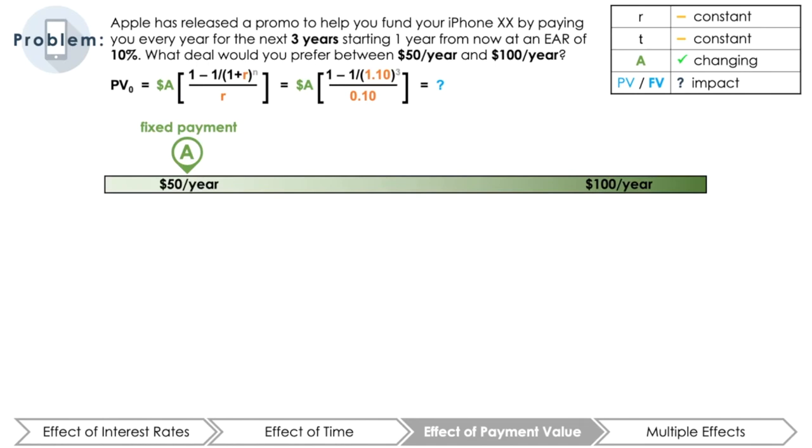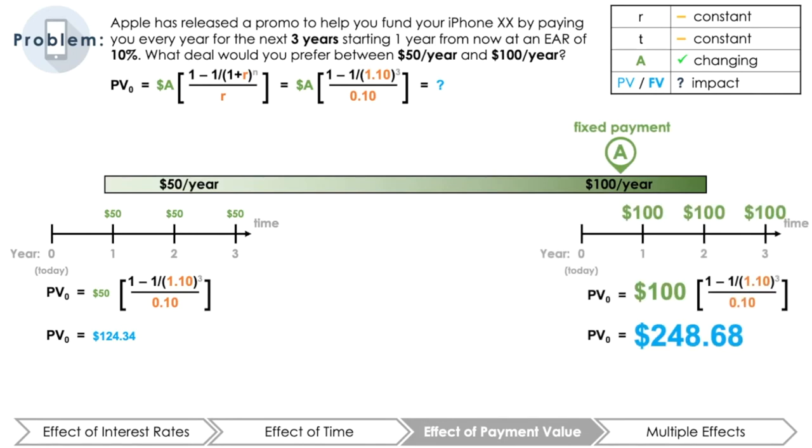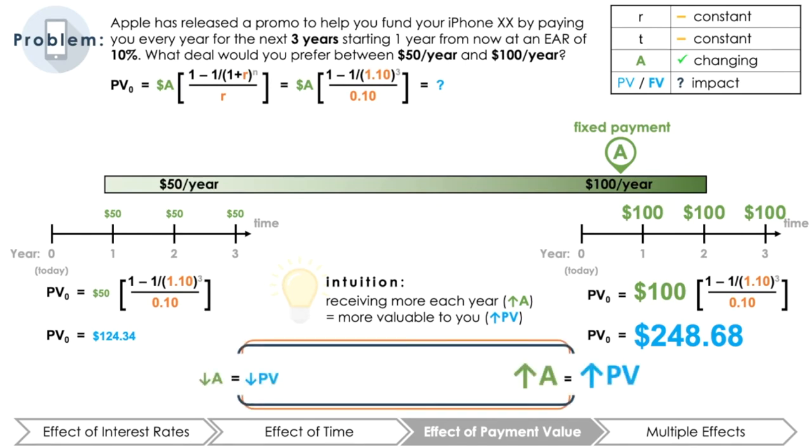After plugging the numbers into the formula, three annual cash flows at an effective annual discount rate of 10% will have a PV equals $124.34 when A equals $50 and PV equals $248.68 when A equals $100. Intuitively, this makes sense. If you are receiving larger contributions and discounting these cash flows back, it should result in a larger present value today. Or, in other words, between someone offering you three $50 payments or three $100 payments, of course, the three $100 payments are more valuable to you, while the three $50 payments is less attractive.